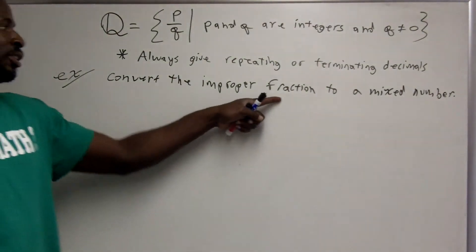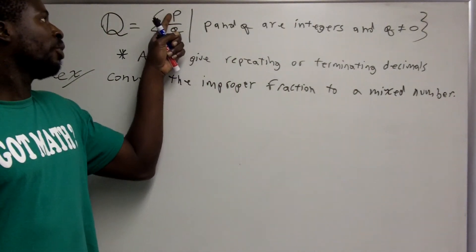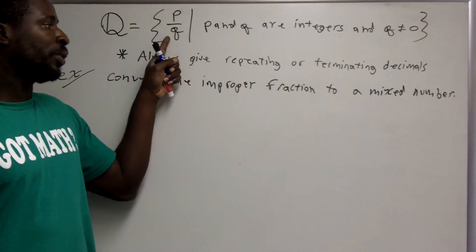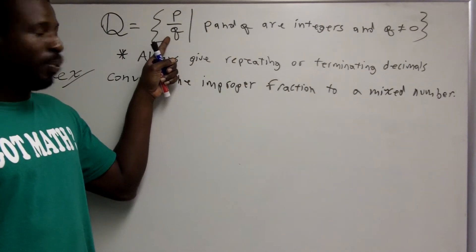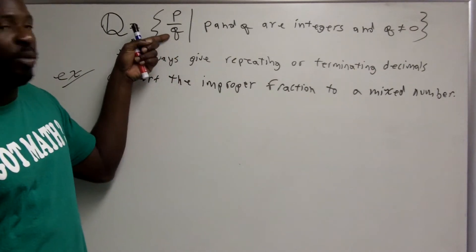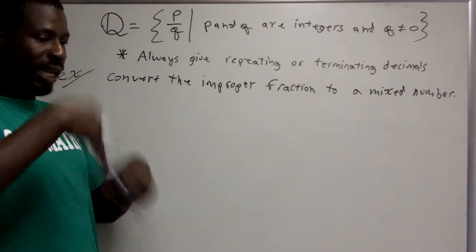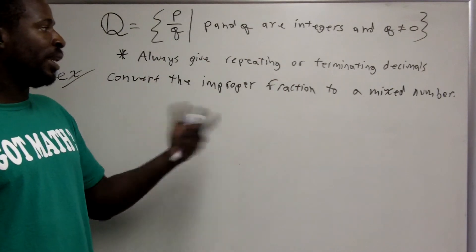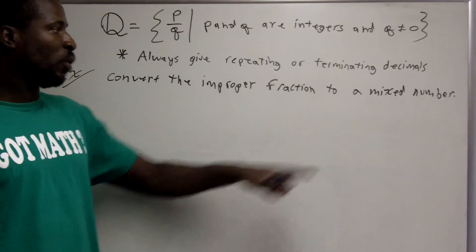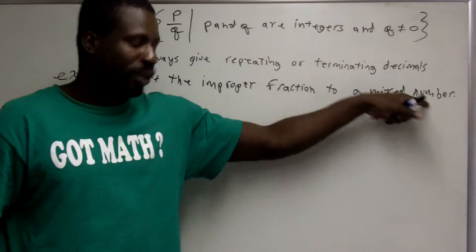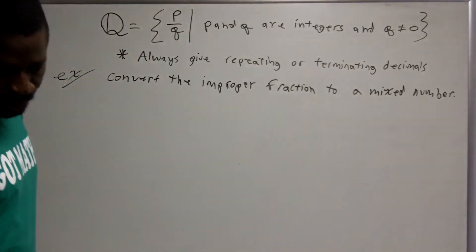An improper fraction is a fraction whose numerator is greater than or equal to its denominator, which means there's a whole number part — a whole number of times that Q can go into P — and if you take that whole number out and write the proper fraction of what's left over, you'll get a mixed number.